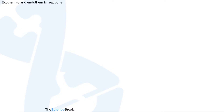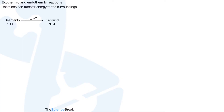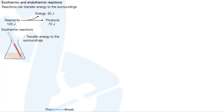Exothermic and endothermic reactions. Reactions can transfer energy to the surroundings. Imagine we have some reactants with 100 joules of energy in their bonds. We produce some products which have 70 joules of energy in their bonds. 30 joules of energy have been transferred to the surroundings — this is an exothermic reaction. For exothermic reactions, energy is transferred to the surroundings, so if we have a reaction going on in a flask, we would detect a temperature rise as shown by the thermometer.